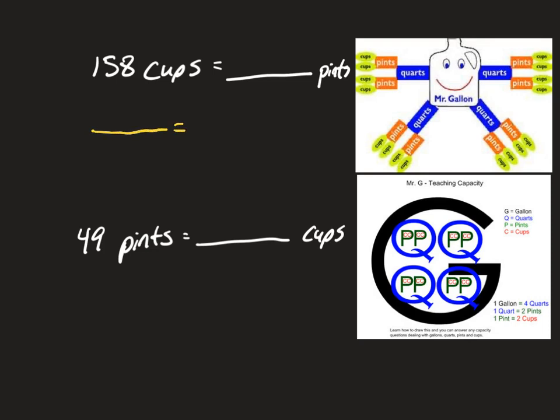I'm going to do that for both of them right away, and then we fill in what we know in the first fraction. I know that two cups equals one pint. Now what do I know from the problem? I have 158 cups, so I would need to go from 2 to 158, so I'm going to multiply.